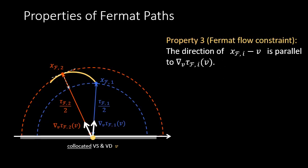Third, Fermat paths satisfy a property that we call the Fermat flow constraint. This property says that the spatial gradient of their length, with respect to the virtual source, is parallel to the direction connecting the virtual source and the point on the non-line-of-sight surface.